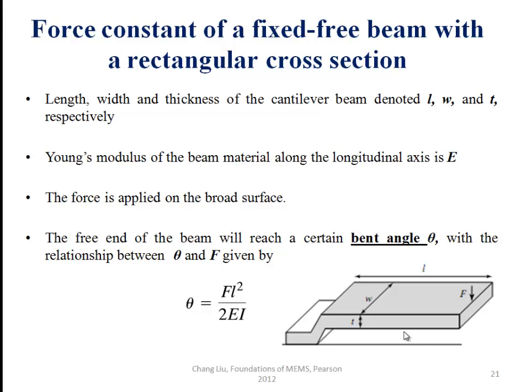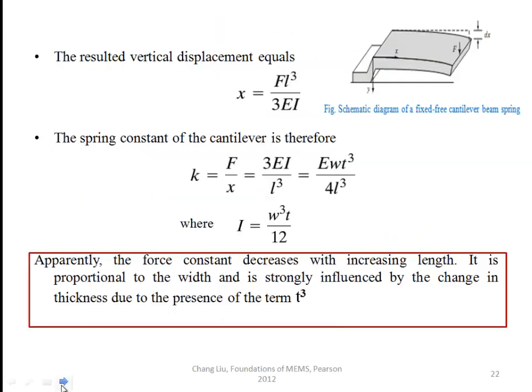The Young's modulus is denoted E. When force is applied, the beam bends at a particular angle, denoted as theta, the bent angle. The bent angle force relation is θ = Fl²/(2EI), which is the general bent angle equation for a beam.